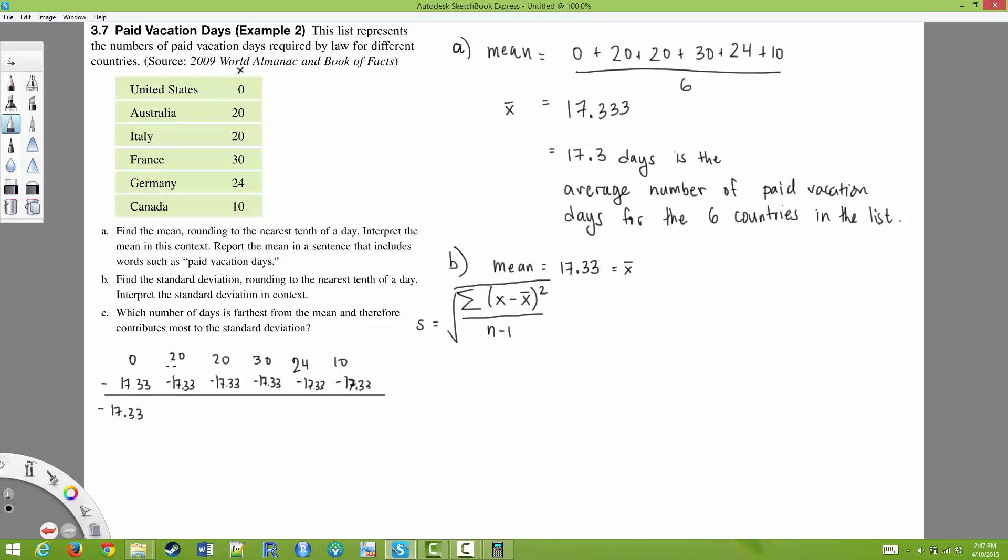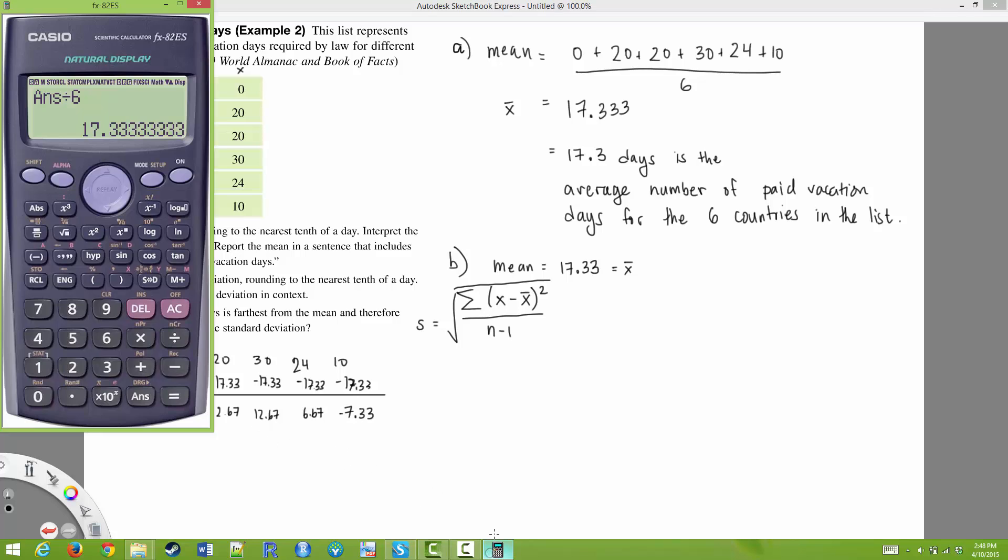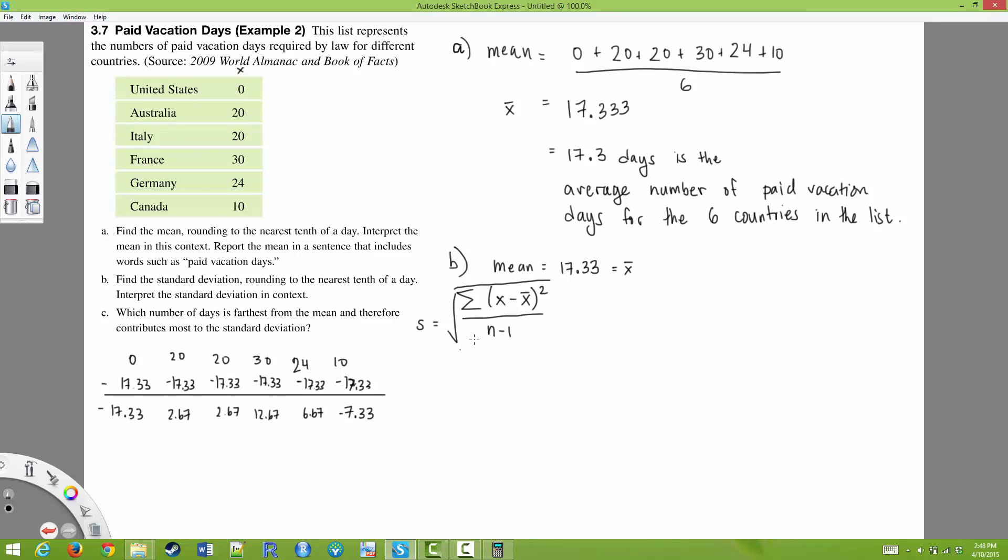So here I get negative 17.33. Here I get 2.67. Again, 2.67. 12.67. 6.67. And negative 7.33. So we can verify all of these things. But we can see that these are the numbers. The next step in finding the standard deviation is squaring each of these numbers. So I'm going to square each number. And I'm going to have to add all of these together.